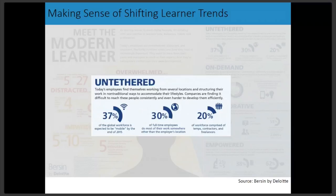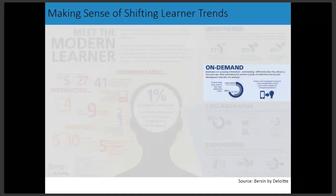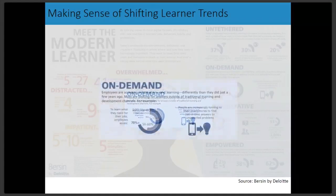Another statistic: 20% of the workforce is comprised of temps, contractors, and freelancers. This is today's reality of the modern learner. All of these things lead to one conclusion: the only training that will be effective for this modern learner is micro learning — that's where we're heading.